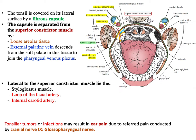In this loose areolar connective tissue there is the external palatine vein, in addition to the tonsillar artery and the glossopharyngeal nerve. So there are veins, arteries, and nerves lateral to the tonsil. The external palatine vein ultimately drains into the pharyngeal venous plexus. Lateral to the superior constrictor muscle you have the facial artery, the carotid sheath, and most closely the internal carotid artery.